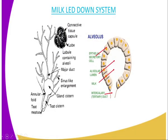Then we have the milk letdown system. You can see from the upper part there is a connective tissue capsule. The hormone oxytocin from the brain, that is from the pituitary gland, will travel to this region, causing contraction to take place so that the milk can start moving downward, up to the region where we have the gland cistern. At the gland cistern, that is where the milk is temporarily stored.